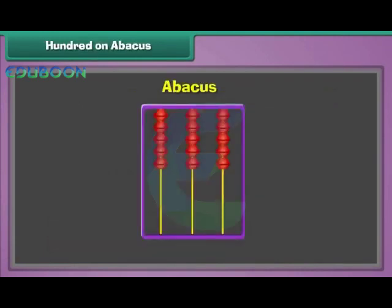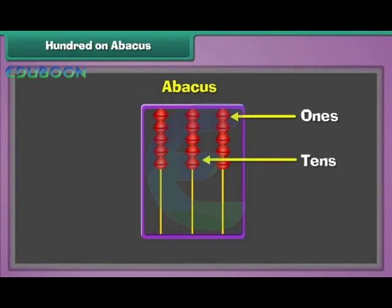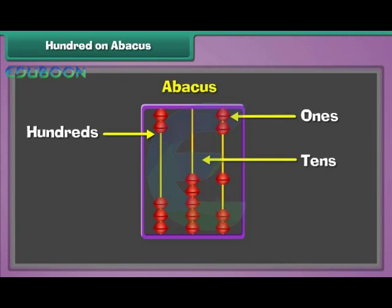Hundred on an abacus. Look at this abacus — it has three strings, and each string represents a position. The rightmost string represents the one's place, the next represents the ten's place, and the leftmost represents the hundred's place. The beads in each string represent the value at each position. There are three beads in the hundred's string, five in the ten's string, and four in the one's string. The number represented by the abacus is three-hundred plus fifty plus four, which equals three-hundred and fifty-four.